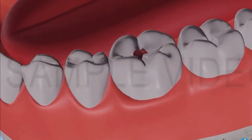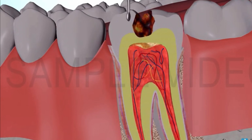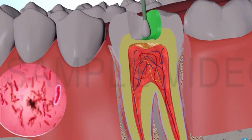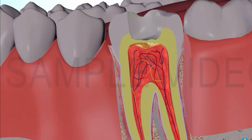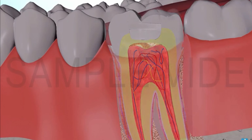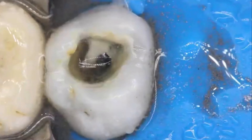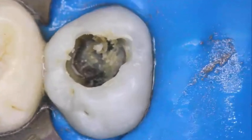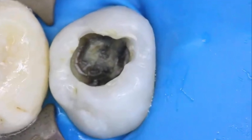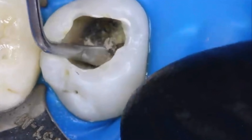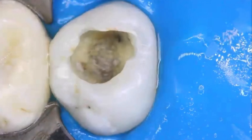Indirect pulp capping uses calcium hydroxide or resin-modified glass ionomer restoration material, placed on a thin partition of remaining dentin which, if removed, might expose the healthy pulp. Always remember the pulp status here is a healthy pulp. The indication is a deep caries situation approximating the pulp — where caries removal gets very close to the pulp, less than a millimeter away.